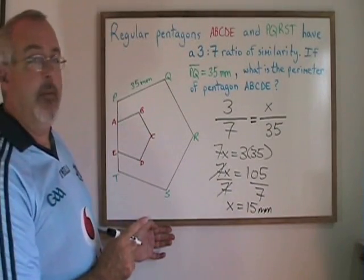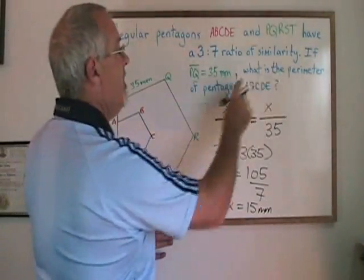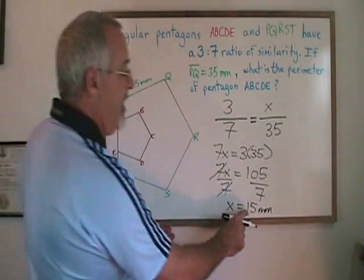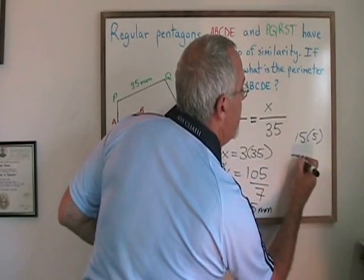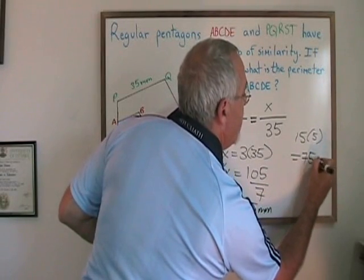But, there is an extra step to do. The question asks for the perimeter of pentagon ABCDE. So I have to take my answer 15 mm and multiply it by 5 to get 75 mm.